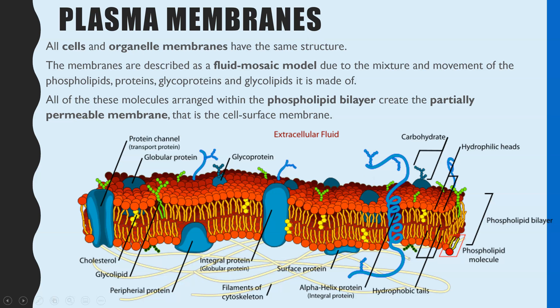So plasma membranes — first thing to point out is when this is stated on the specification, it doesn't just mean cell membranes. It also means the membranes surrounding organelles, such as the mitochondria. The plasma membrane structure is the same whether it's on the surface of a cell or the outside of an organelle.